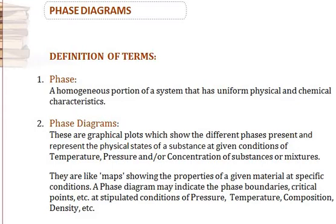Before then we need to define some terms, especially phase. How can we treat phase diagrams without knowing what a phase is? A phase is a homogeneous portion of a system that has uniform physical and chemical characteristics. You've probably known of the states of matter.